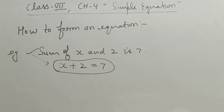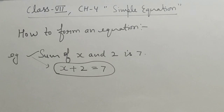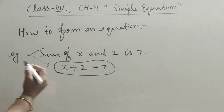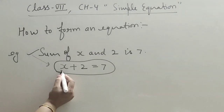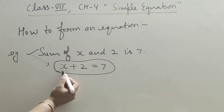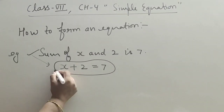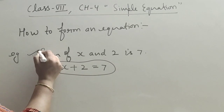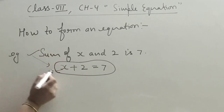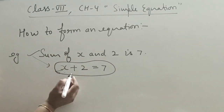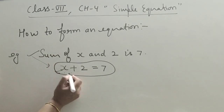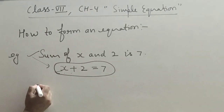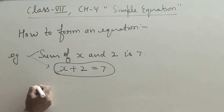We can also go the other way — from statement, form the equation; and if the equation is given, we can also write the statement. For example, x plus 2 equals 7 can also be written as 'addition of x and 2 is 7.'